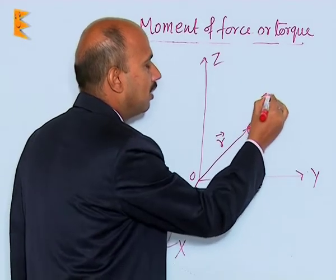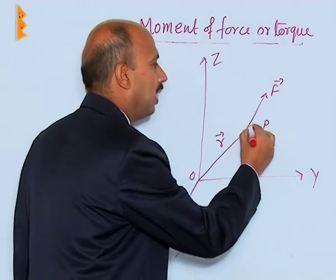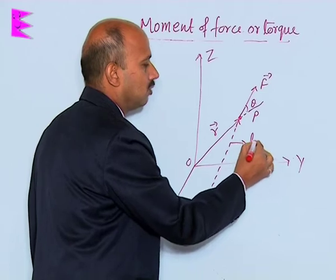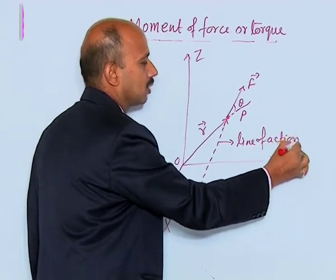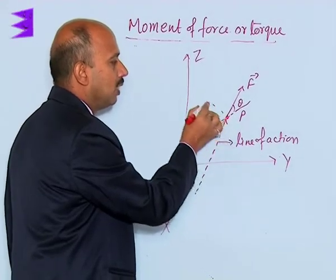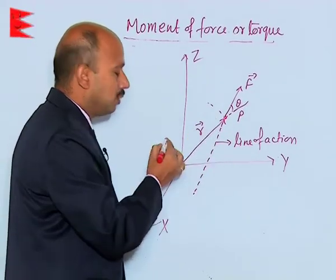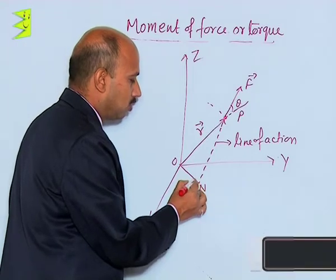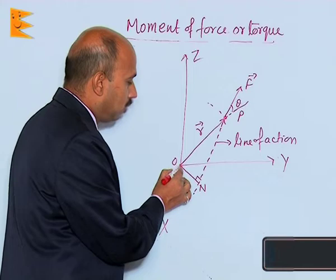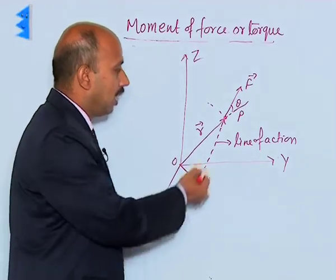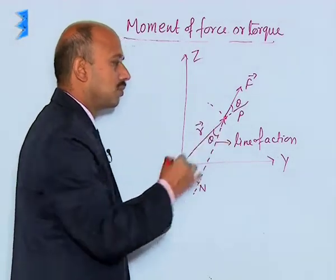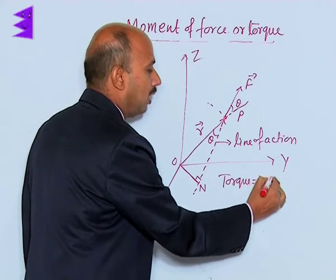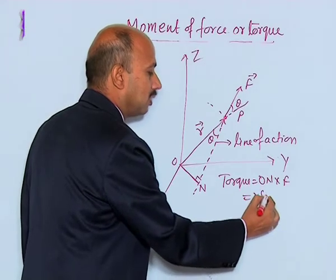You are applying force F at point P. This F makes an angle theta with the position vector R. The line of action of force is produced, and ON is the perpendicular distance from the origin to the line of action. So ON is the perpendicular distance between the axis of rotation and the line of action. Therefore, torque equals R sin theta into F, that is, tau equals R F sin theta.